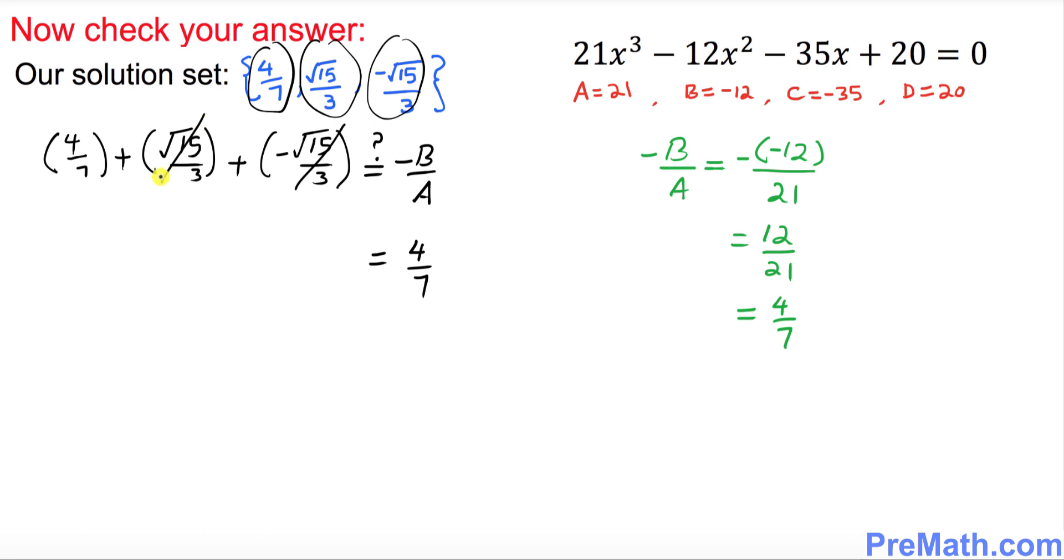Now we figured out negative b over a is 4 over 7, and on the left hand side these two cancel out. We ended up with 4 over 7 on the left hand side as well. Now my question is, is this statement true? Yes, this statement is indeed true. That means our answer is checked. Thanks for watching and please subscribe to my channel for more exciting videos.